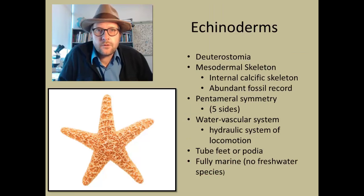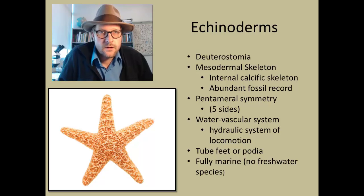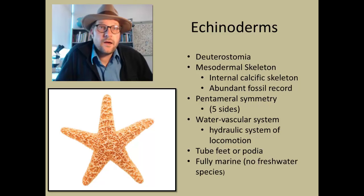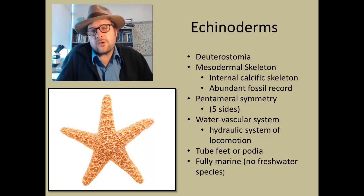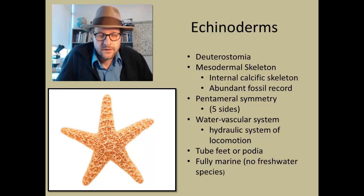Echinoderms are the first group of invertebrates we are examining in this class that are members of the Deuterostomia — they are actually more closely related to us than any other invertebrate we will look at. Echinoderms include the starfish, sea cucumbers, and sand dollars, and all of them are marine invertebrates living within the oceans of the world.